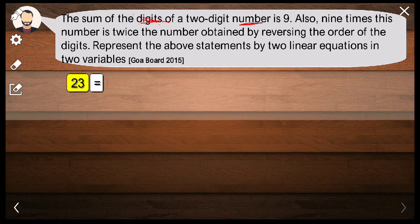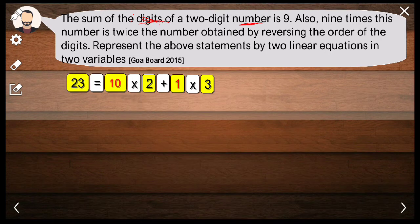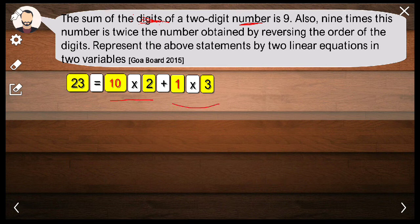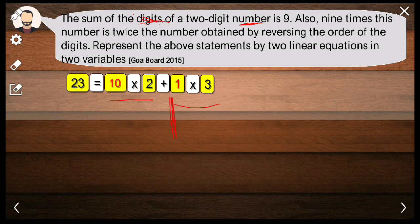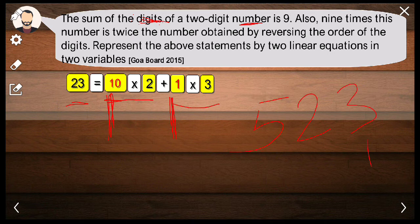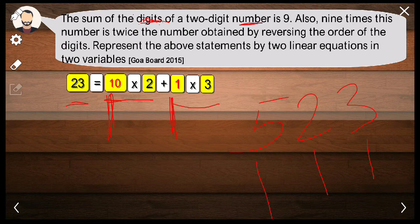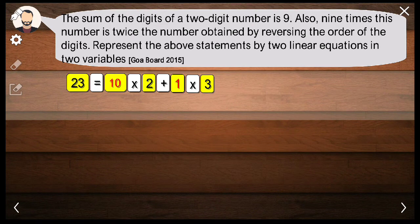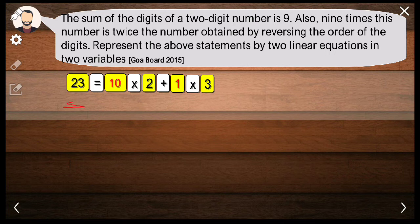23 can be written as 10 multiplied by 2 plus 1 multiplied by 3. This 1 tells you its place value, where exactly the 3 is sitting. It's sitting in the units place. 10 tells you that it is sitting in the tens place. If I had another number, say 523, this tells you it is in its units place, tens place, and hundreds place.